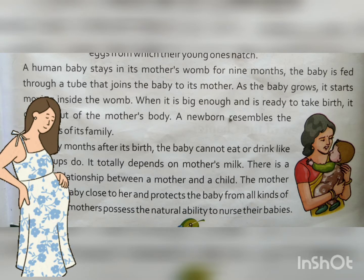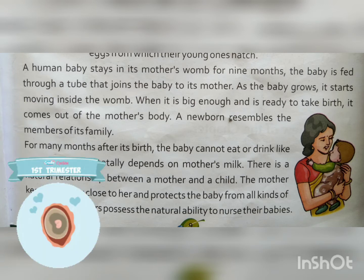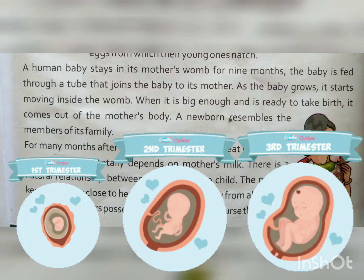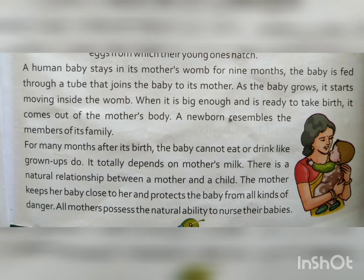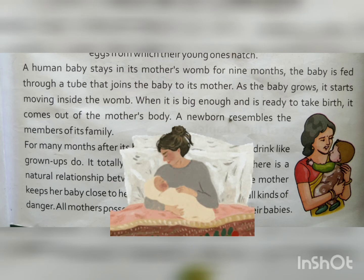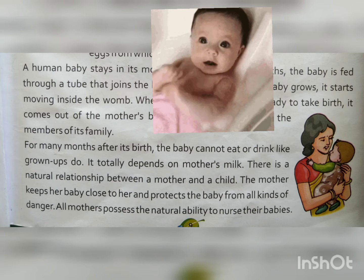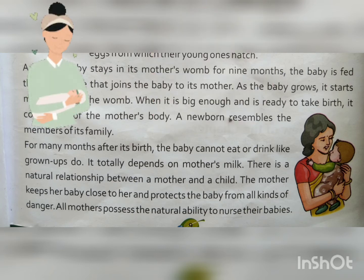A human baby stays in its mother's womb for 9 months. The baby is fed through a tube that joins the baby to its mother. As the baby grows, it starts moving inside the womb. When it is big enough and is ready to take birth, it comes out of the mother's body. A newborn resembles the members of its family. For many months after its birth, the baby cannot eat or drink like grown-ups do. It totally depends on mother's milk.